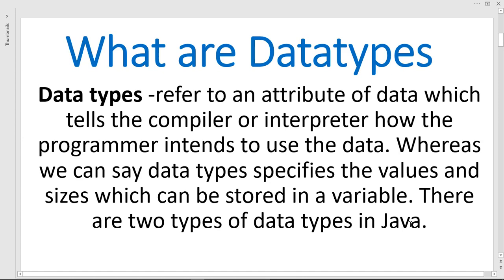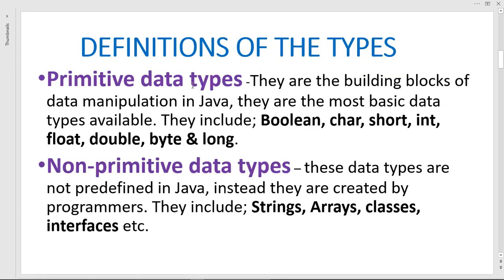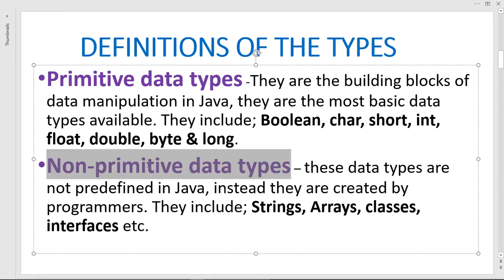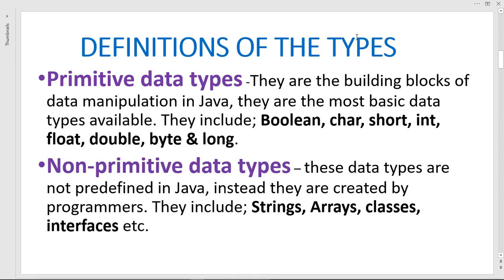There are only two types of data types in Java. The two types of data types are primitive and non-primitive data types. Primitive data types are the built-in blocks of data manipulation in Java — they are the most basic data types available. They include: